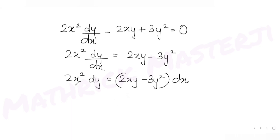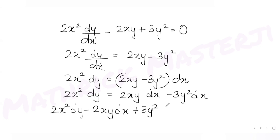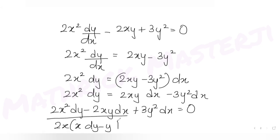Expanding and collecting everything on one side: 2x² dy minus 2xy dx plus 3y² dx equals 0. From the first two terms, 2x is common, so we get: 2x(x dy minus y dx) plus 3y² dx equals 0.